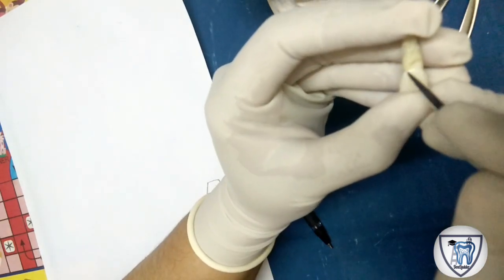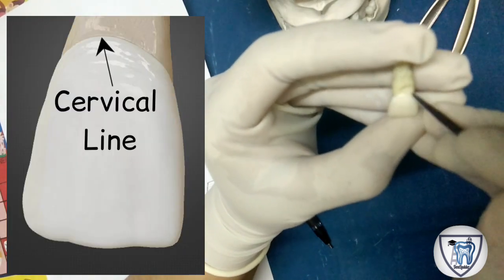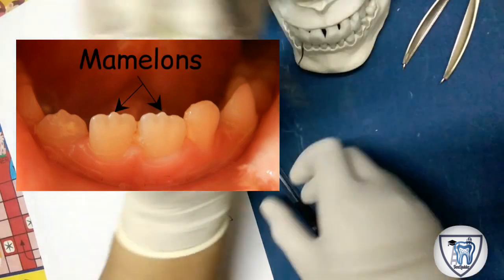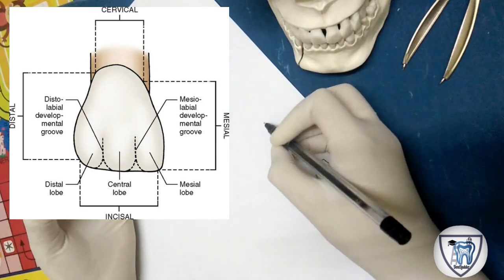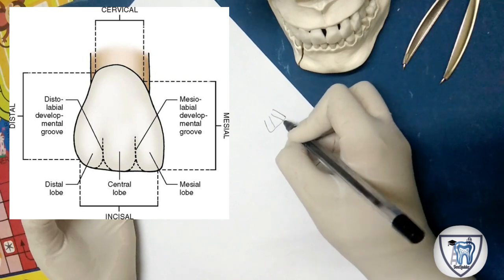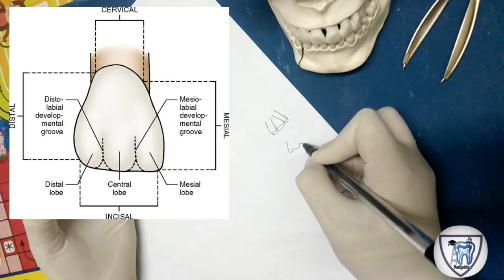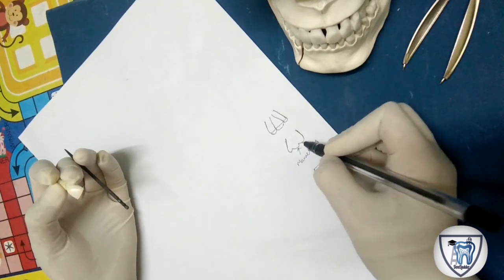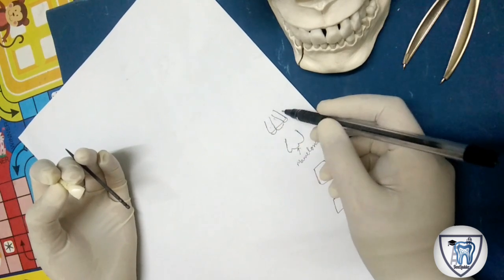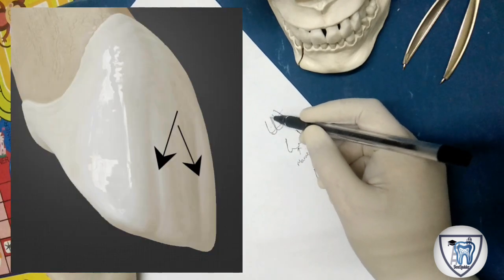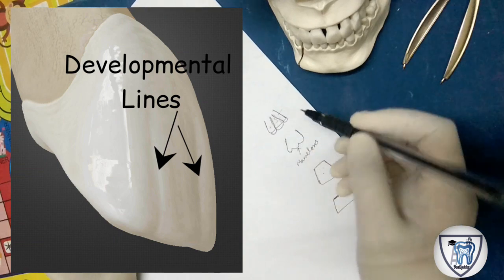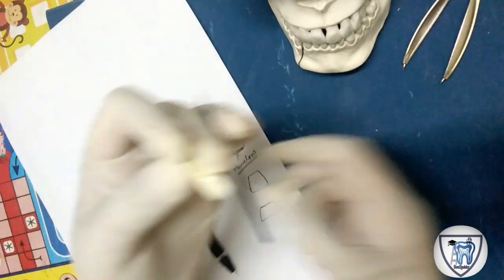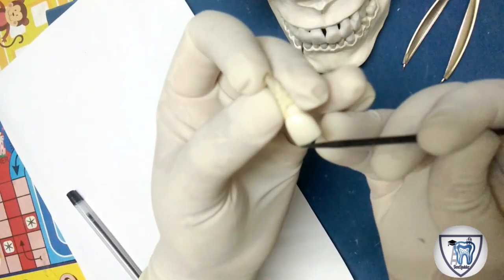One more feature is the cervical line, which is convex towards the root. A characteristic feature of the maxillary central incisor is the presence of mamelons. All teeth develop from developmental lobes; similarly, the maxillary central incisor develops from three lobes. Extensions of these lobes appear as protuberances in young permanent teeth called mamelons. These mamelons are not seen in adult teeth because they get obliterated due to prolonged functioning — you can see this tooth has no mamelons.